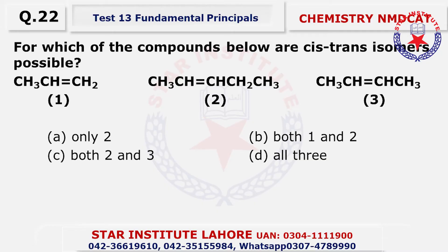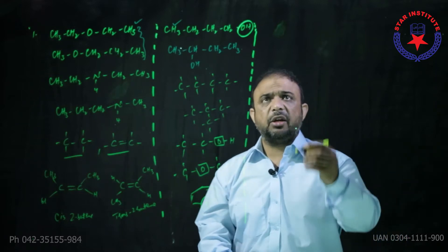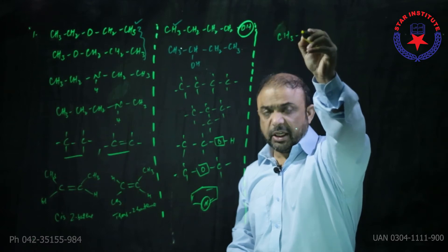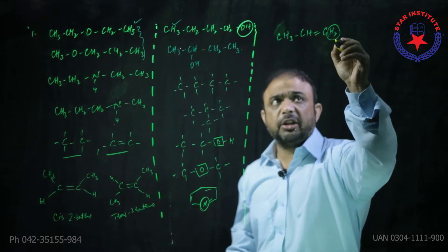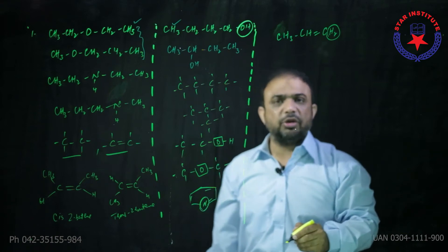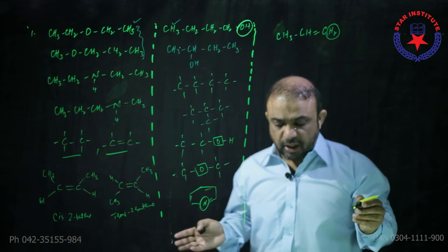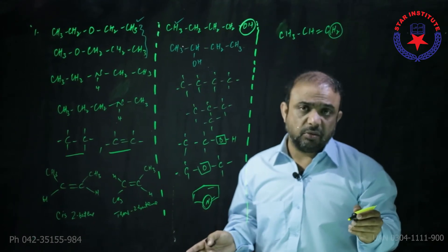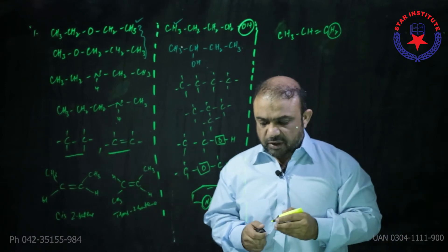Question number twenty-two: For which of the following compounds are cis-trans isomers possible? In number one, cis-trans isomerism is not possible — why? When you look at the formula of number one, it is CH3-CH=CH2 — and to show cis-trans isomerism, the multiply bonded carbons must be attached to two dissimilar groups. Here both are similar, so it is not possible. Whereas in choice B and C it is possible, because they are attached to two dissimilar groups. So obviously the choice is C.